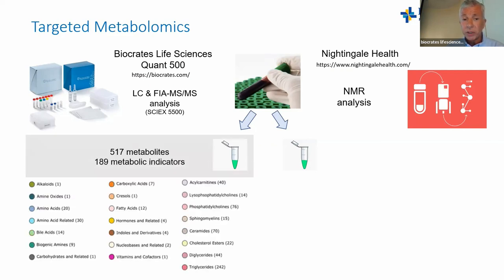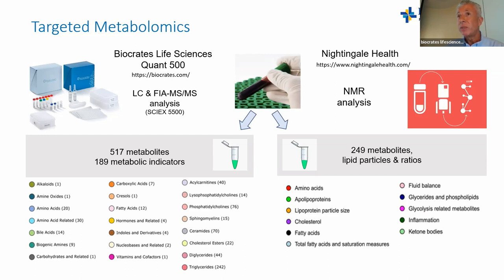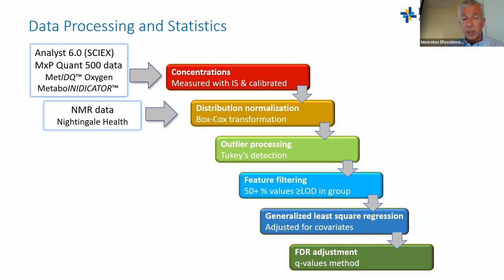In terms of coverage, the Quant 500 can potentially detect 630 metabolites and 230+ metabolic ratios or indicators. We actually determined 570 metabolites and 189 metabolic indicators across over 23 different classes of compounds — quite wide coverage. The NMR analysis also has good coverage but is mostly confined to lipoprotein particles and particle sizes.